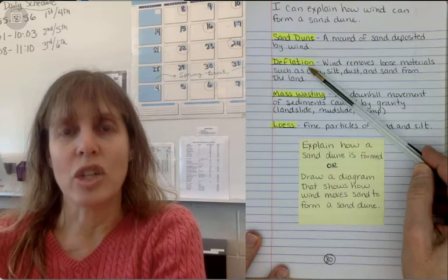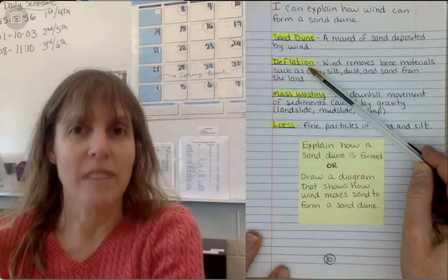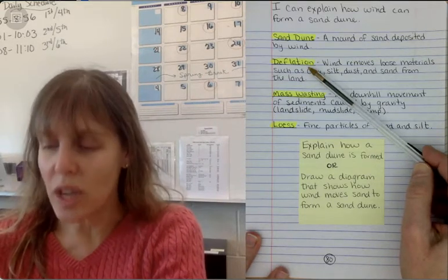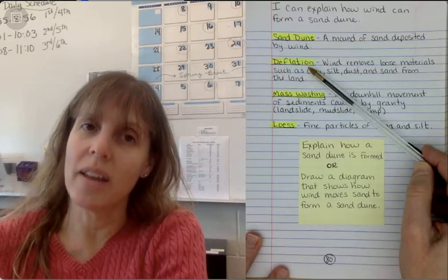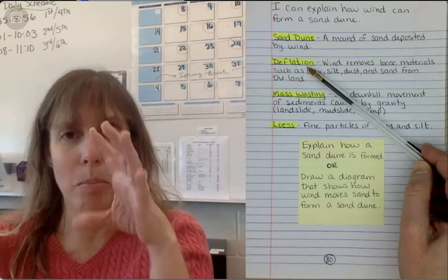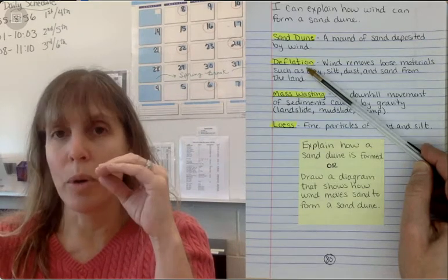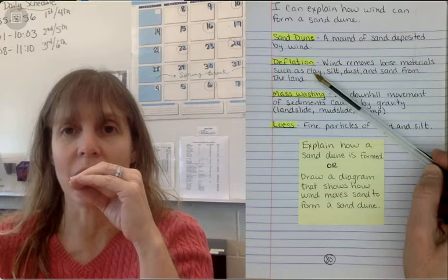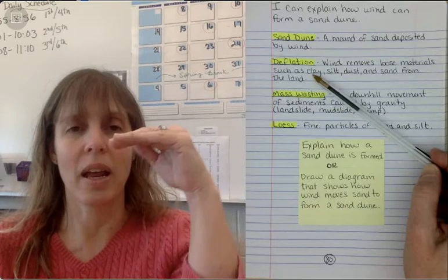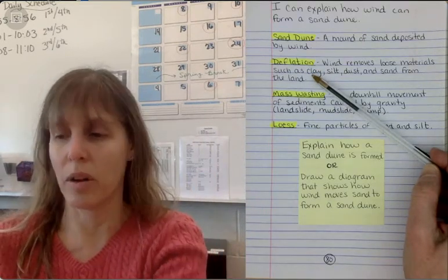The next term is deflation. Say it with me: deflation. So deflation is not inflation, it's kind of the opposite. If you inflate a balloon, it gets bigger. If you deflate a balloon, it gets smaller, right? So deflation is when wind removes loose materials such as clay, silt, dust, and sand from the land and it kind of will wear it down. It'll pull that away.